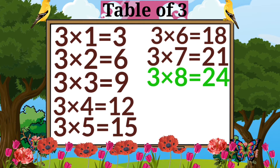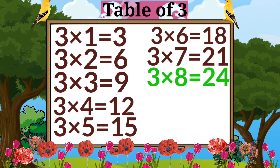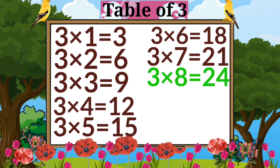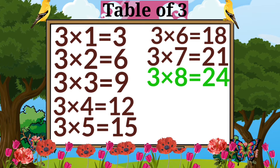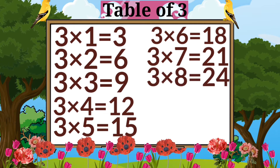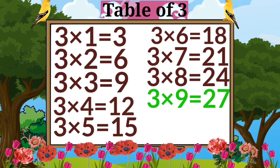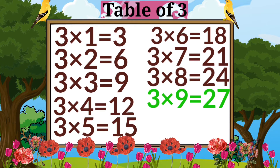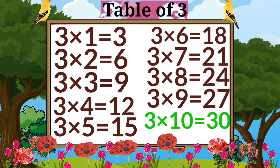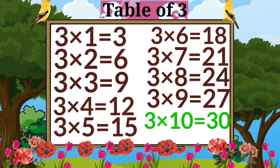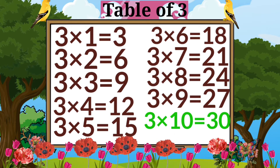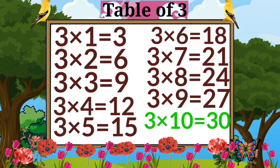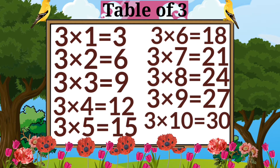Three eights are twenty-four. Three nines are twenty-seven. Three tens are thirty.